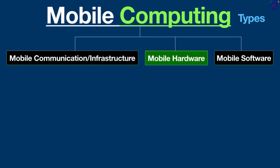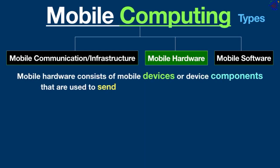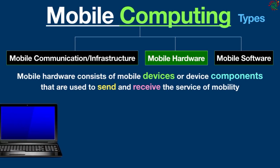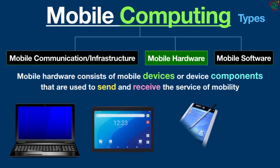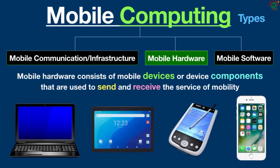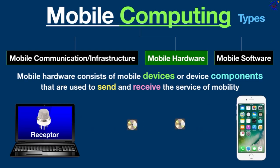The second component of mobile computing is mobile hardware. Mobile hardware consists of mobile devices and all device components used to send and receive the service of mobility. Examples of mobile hardware include laptops, tablets, portable PCs, personal digital assistants, smartphones, and so on. These devices are inbuilt with a receptor medium that can send and receive signals, and they are full duplex, meaning they can send and receive data at the same time.